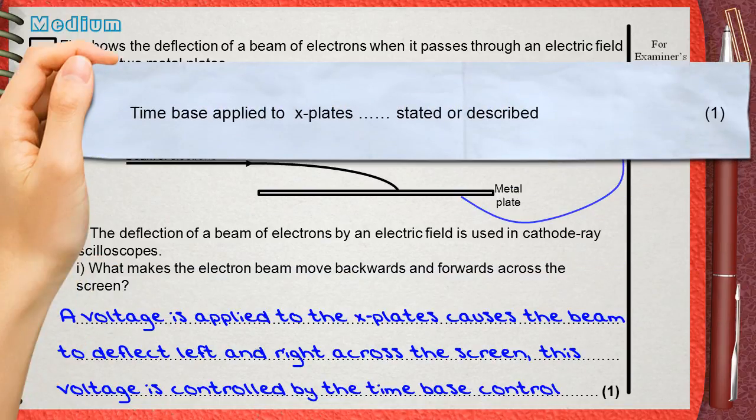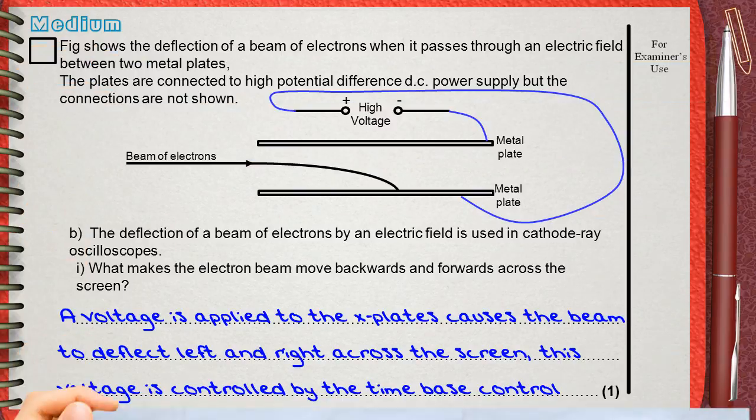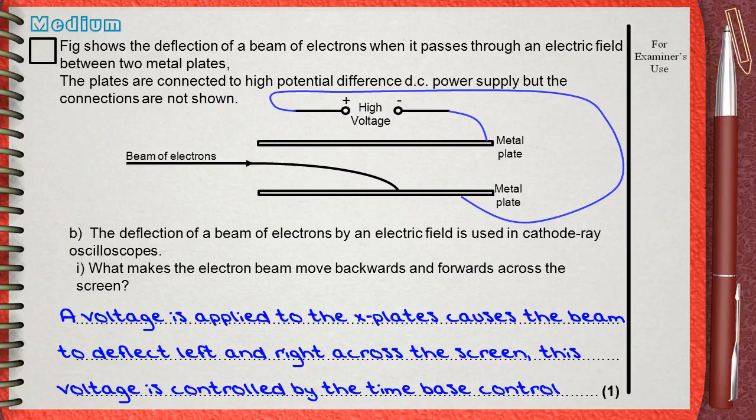Let's see the mark scheme. The mark scheme gives one mark for time base applied to X plates, stated or described. You can say this or you can describe what happens. This question is for one mark.